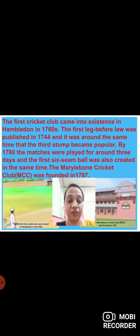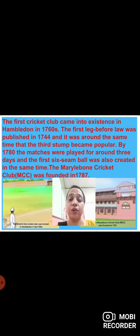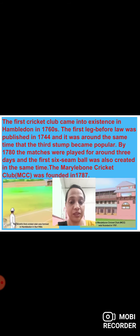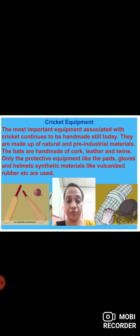The first cricket club came into existence in Hambledon in the 1760s. The first leg before wicket law was published in 1744, and it was around the same time that the third stump became popular. By 1780, matches were played for around 3 days, and the first six-seam ball was also created at the same time. The Marylebone Cricket Club (MCC) was founded in 1787.